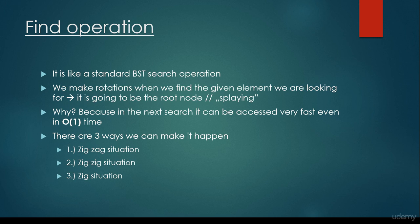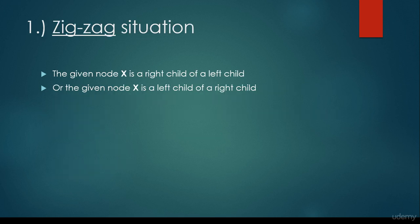There are three ways we can make it happen: the zig-zag situation, the zig-zig situation, and the so-called zig situation. What is the zig-zag situation? When the given node X we are looking for is a right child of a left child, or a left child of a right child. It's very important that a tree-like structure — whether it's an AVL tree, a red-black tree, or a binary search tree — is very, very symmetric, and this symmetry is the same for splay trees. It can be a right child of a left child, but it can be a left child of a right child — we have to make the same rotations.